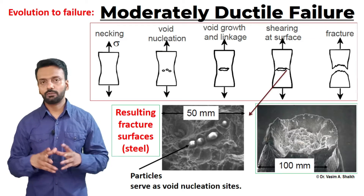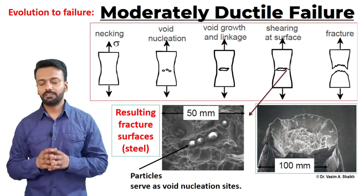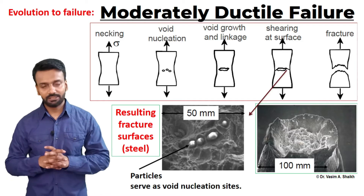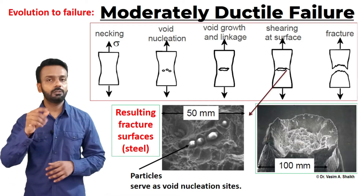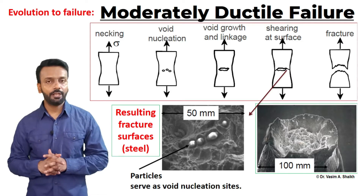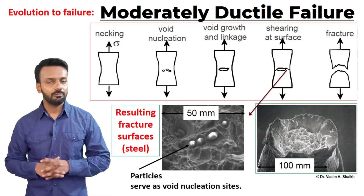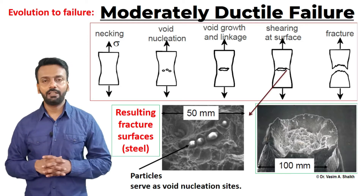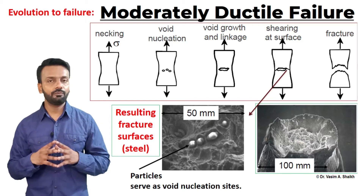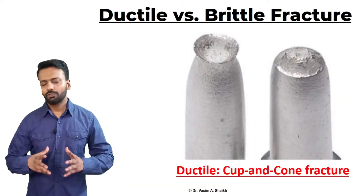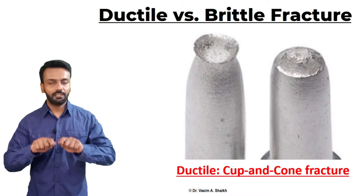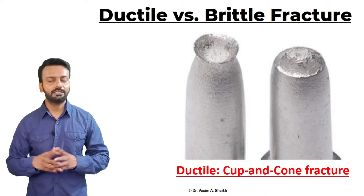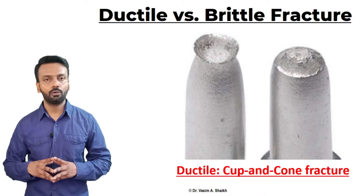When we look into the micrographs of the failed surface, we see small particles which are there. These particles serve as a void nucleation site — just beside these particles, voids will nucleate during the void nucleation process and these voids will multiply as you keep increasing the load. A typical moderately ductile failure appears as a cup and cone failure. You can look at this image and see that when the ductile material fails, it is accompanied by a lot of deformation, change in size and change in length, and it appears as a cup and cone failure.